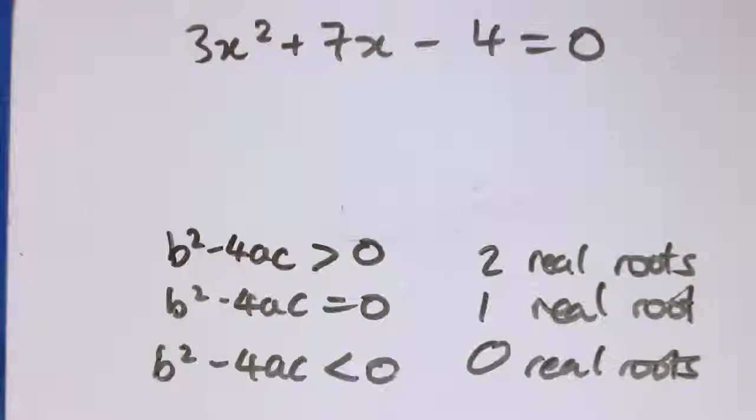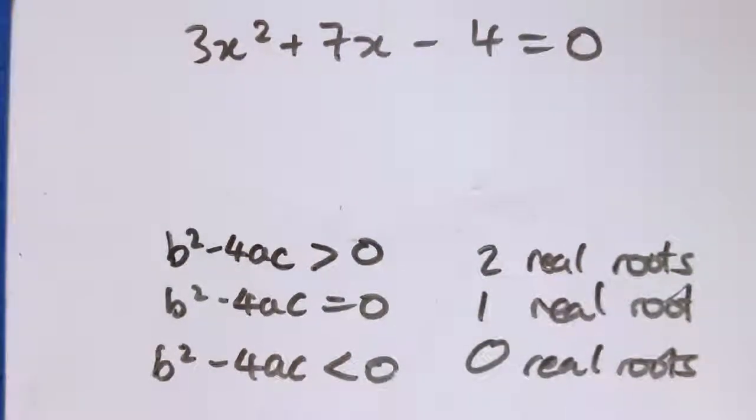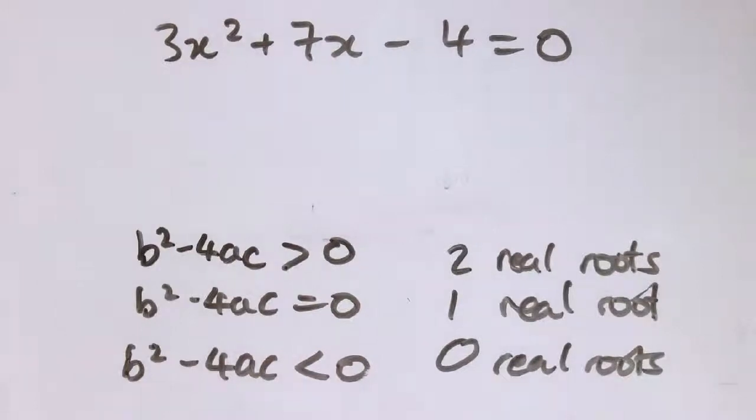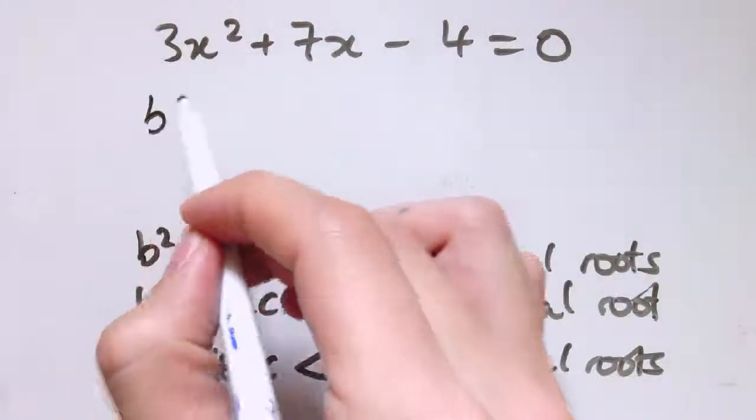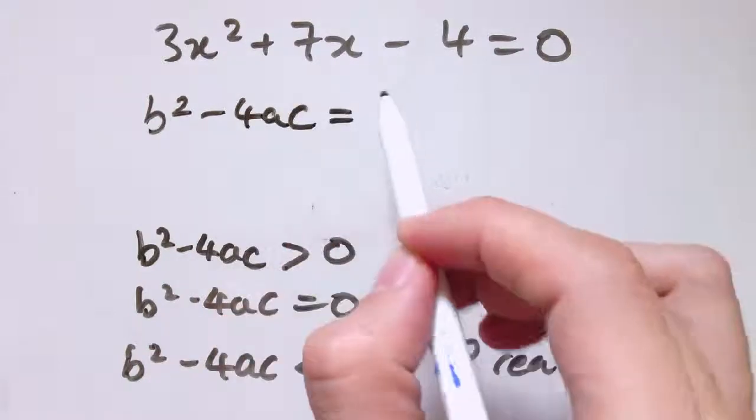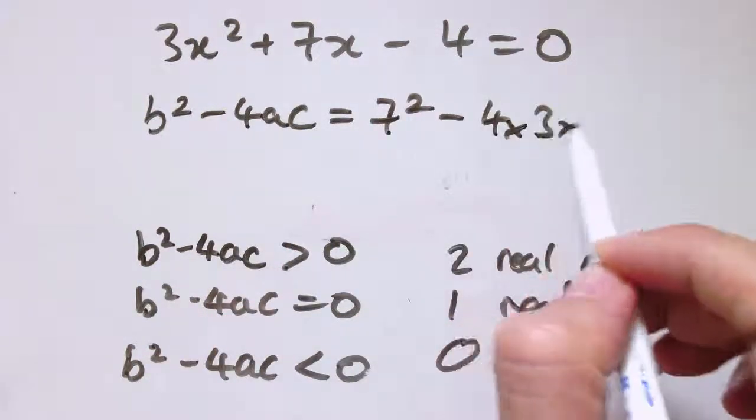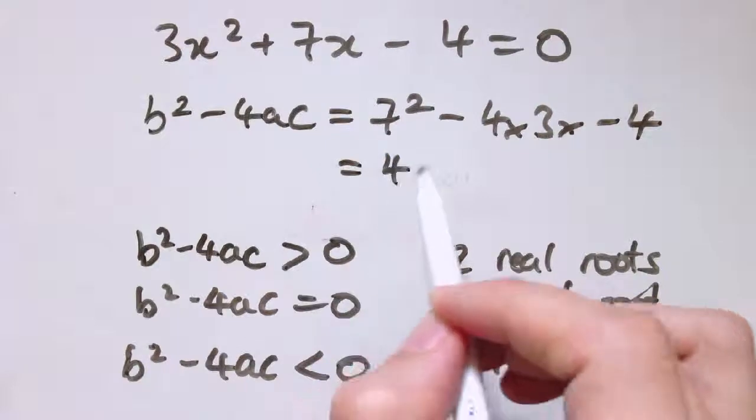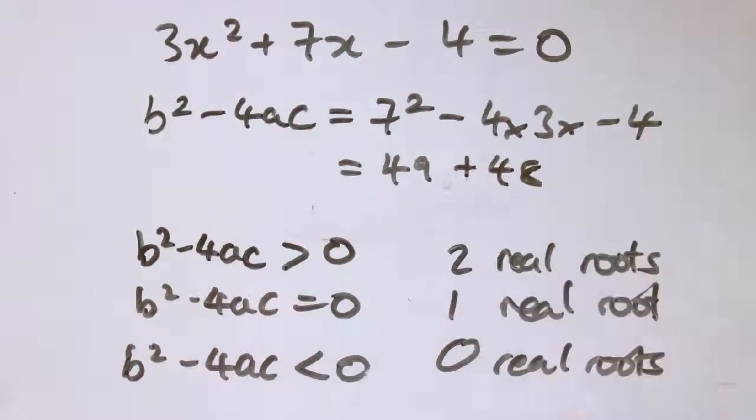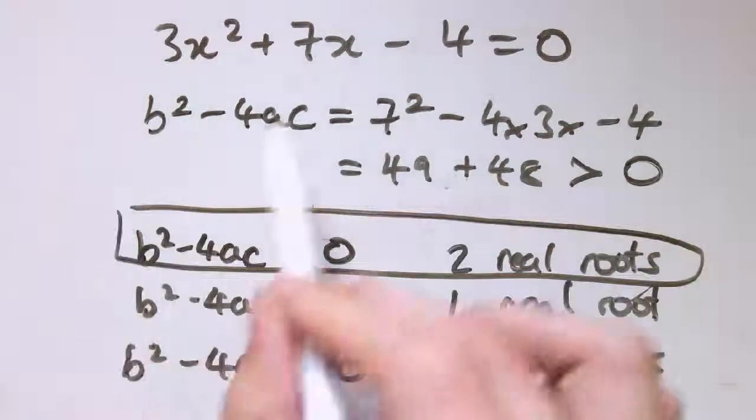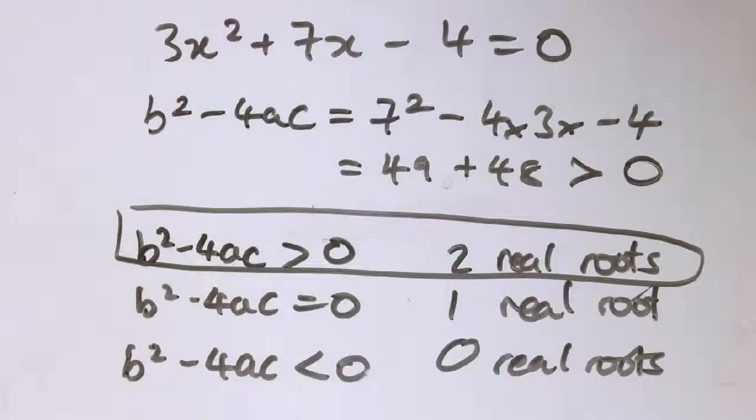And once we know this, we don't have to necessarily work out the roots to know how many there are. So here I could just go straight for the discriminant. I could say b squared minus 4ac, that's 7 squared minus 4 times 3 times minus 4, so that's 49 plus 48. Even without working it out, that's positive, so I know I'm in this case where this quadratic equation would have two real roots.